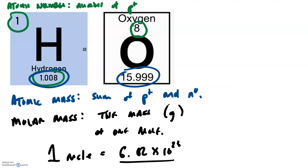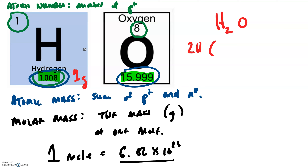It works with molecules too. If I was going to ask you for the molar mass of a molecule of water, we know there are two hydrogen atoms, each with a molar mass. We're going to round to the nearest whole number to make it easier. The molar mass of hydrogen is 1 gram. So two hydrogen atoms have a molar mass of 2 grams — it takes 2 grams to have a mole of molecular hydrogen.